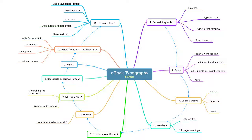Can we add content — for example, something at the end of each paragraph or section that repeats automatically? Can we use tables? What about asides, sidebar information, footnotes, and hyperlinks? And finally, are there any special effects to discuss — drop caps, reversing out, shadows, and so forth?